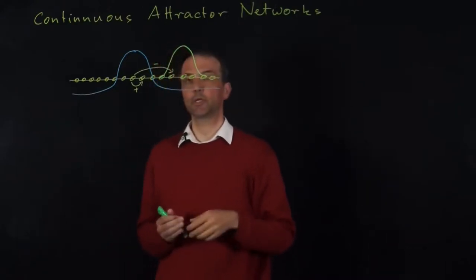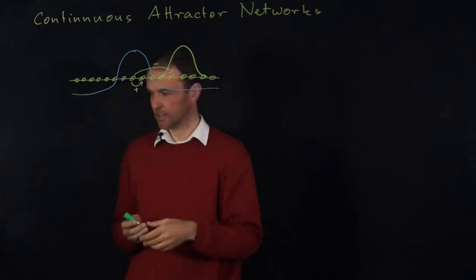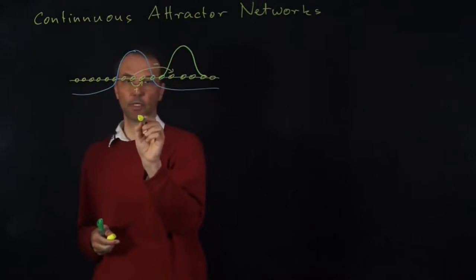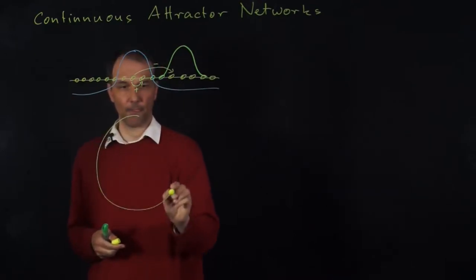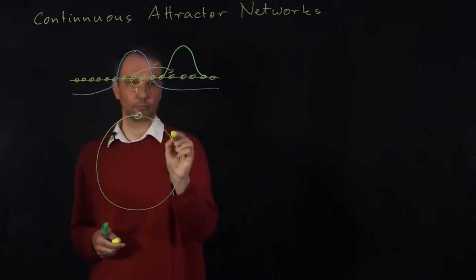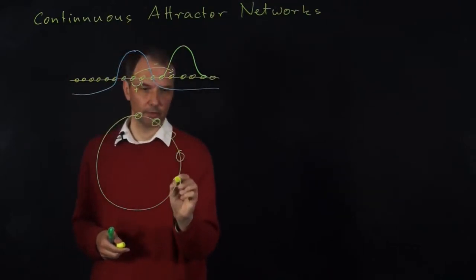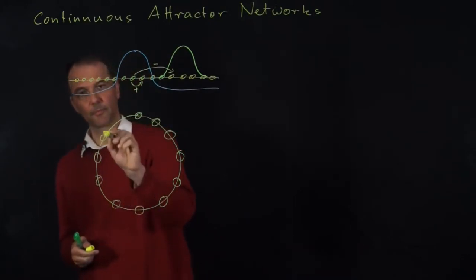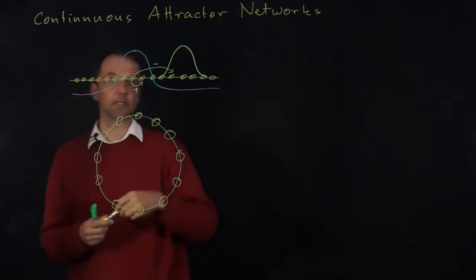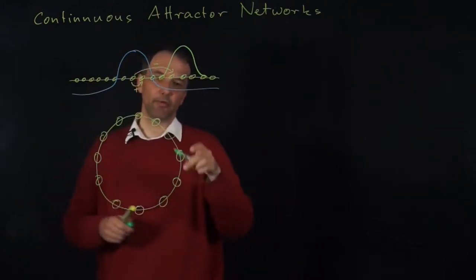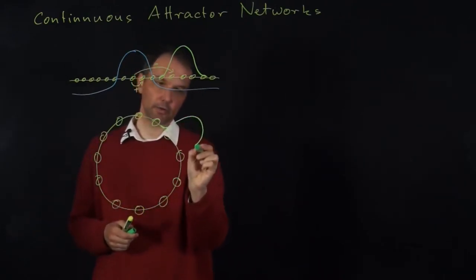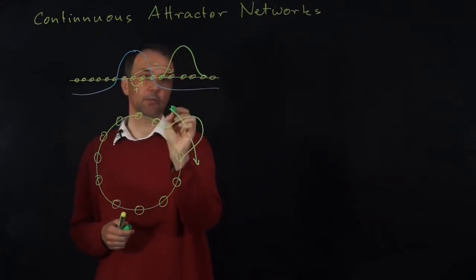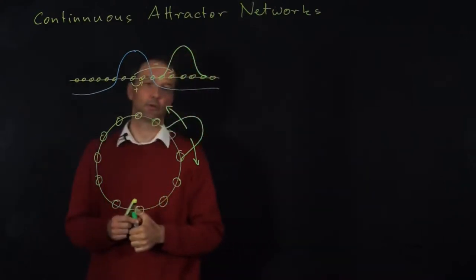To model head direction cells, we take such a sheet and connect it to a ring. We have a dense set of neurons — I only show a few of them around. With the same connectivity, we then have a blob of activity riding on this ring, and this blob of activity is free to move to the left and to the right.